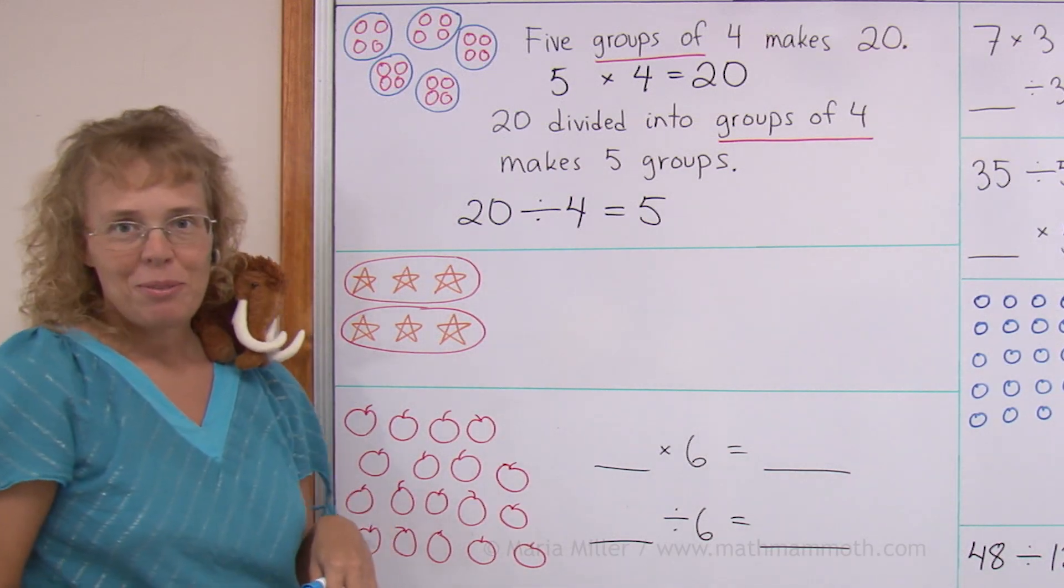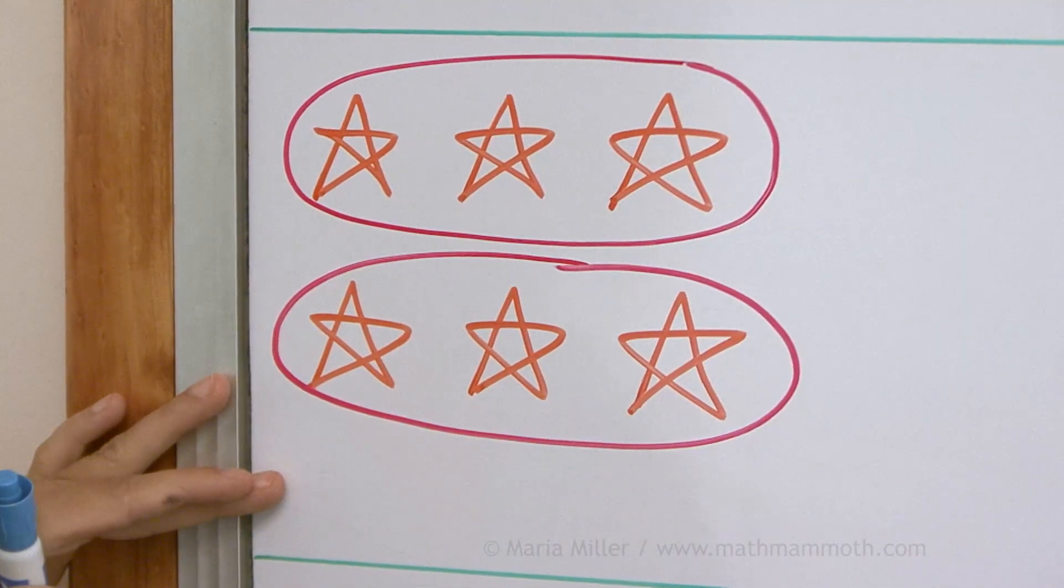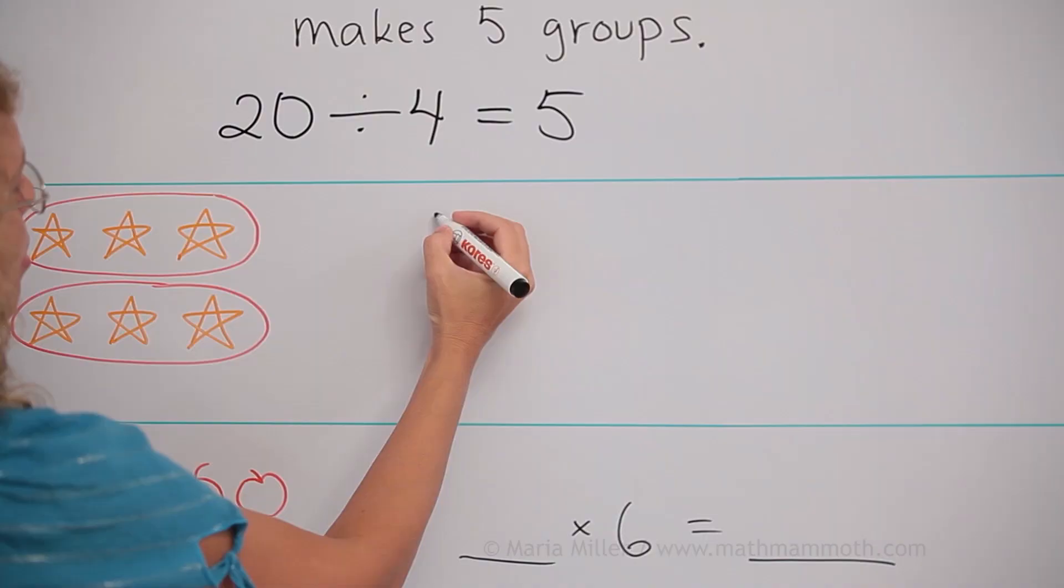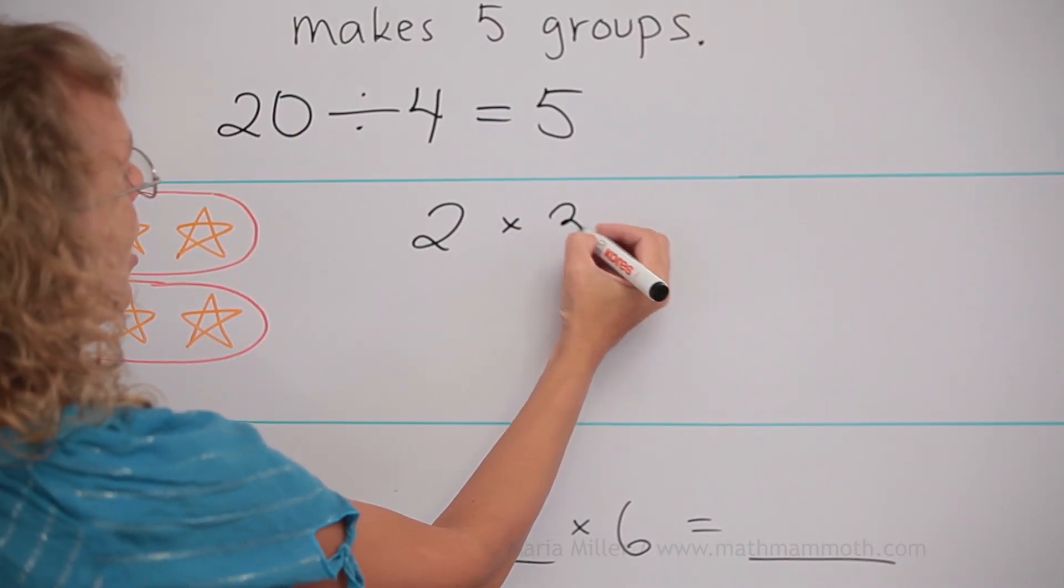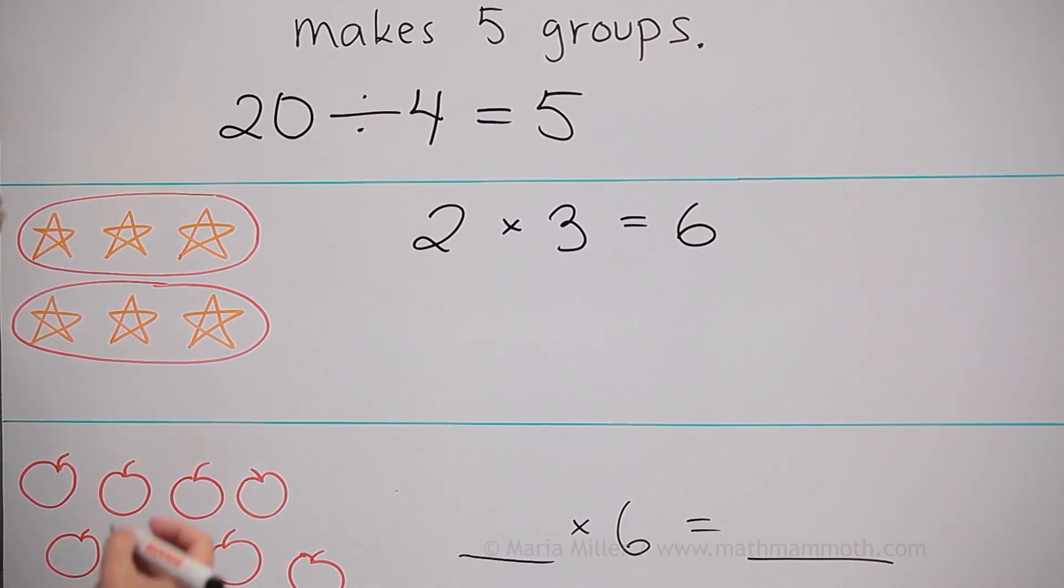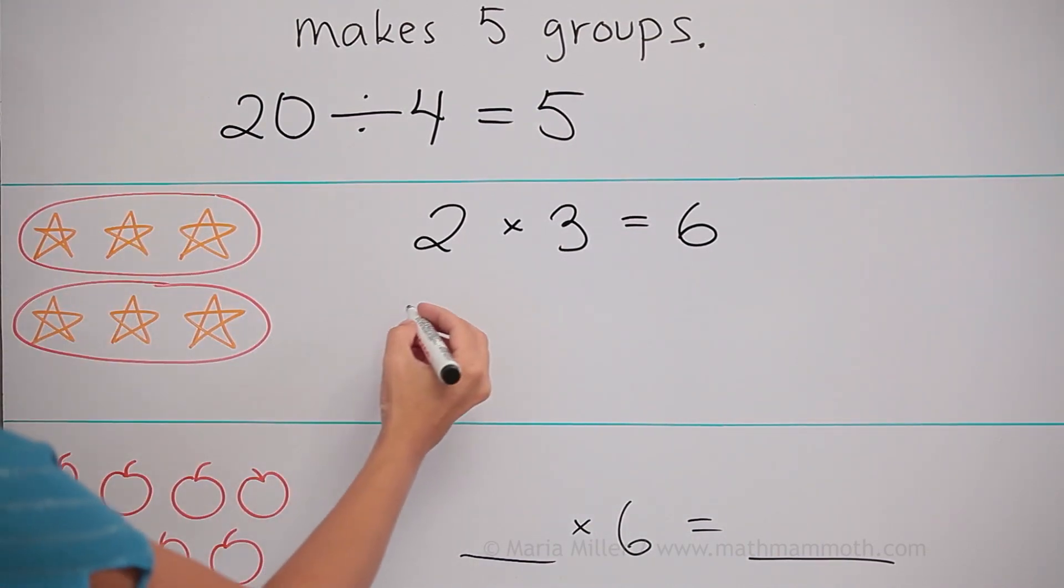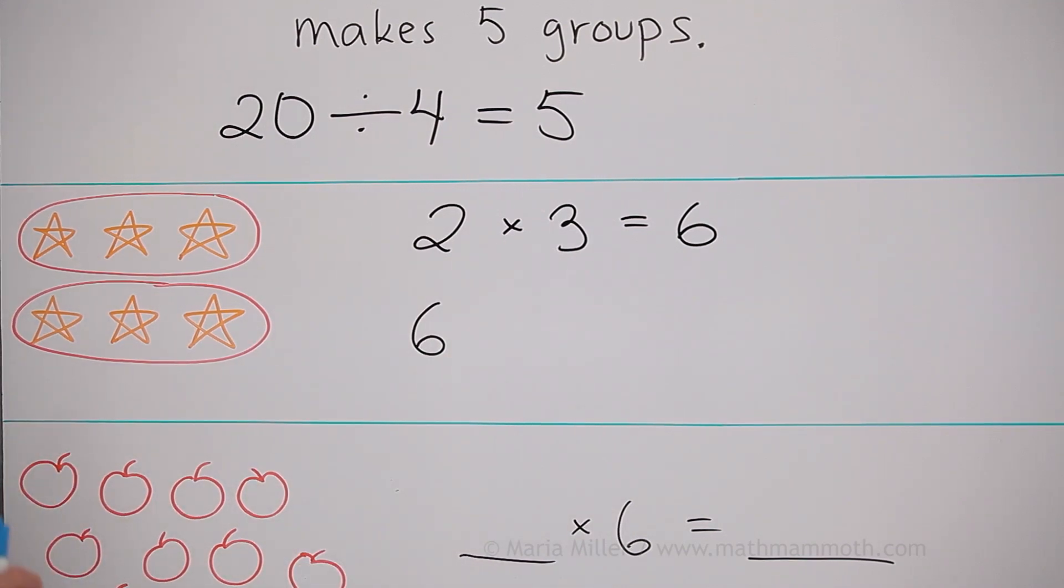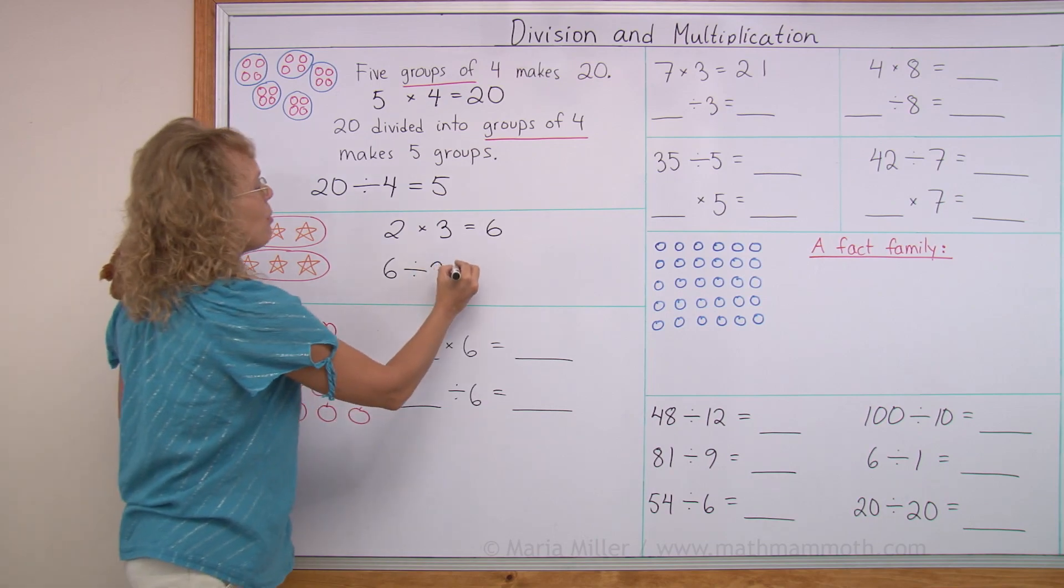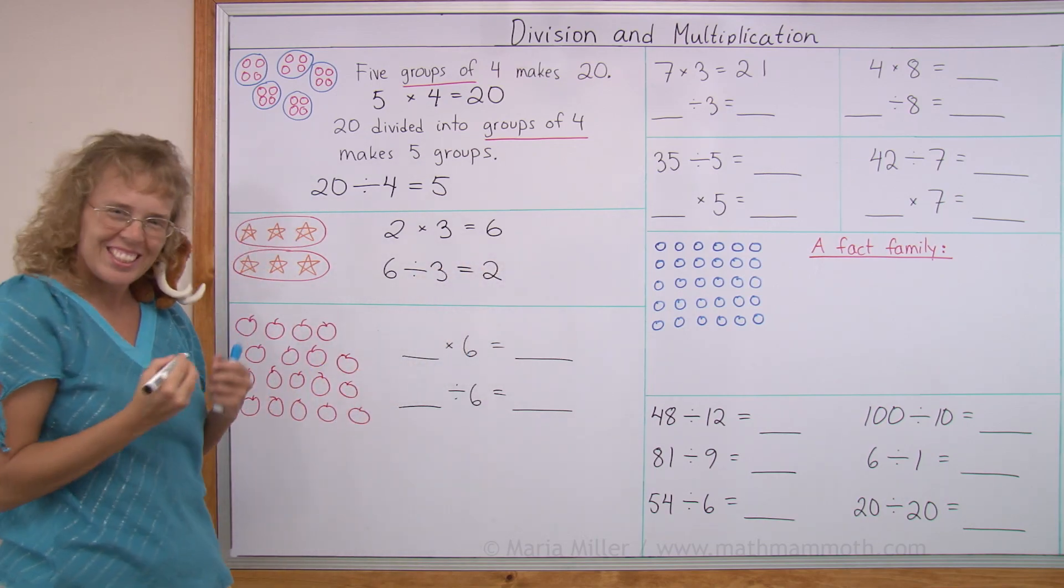Let's look at another example. Here I have a picture and our task is to write a multiplication and a division to match the picture. Notice this one has groups of three, two groups of three. So that gives me my multiplication, two times three equals six. And then the division, I will start with the total number of stars, six. Then again, groups of three, so I divide by three. And I get how many groups? Two groups. So this is easy.